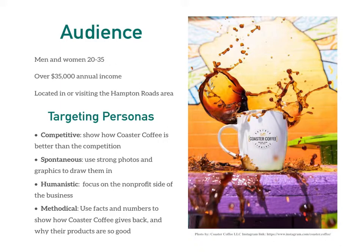For our humanistic personas, we want to focus on the non-profit side of the business, making the audience care about Coaster Coffee and their mission. For the methodical audience, we want to use facts and numbers along with the mission and the giving back, so the audience has some tangible proof as to Coaster Coffee's mission and why they are good.